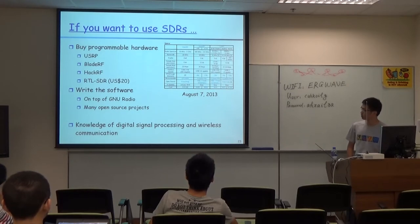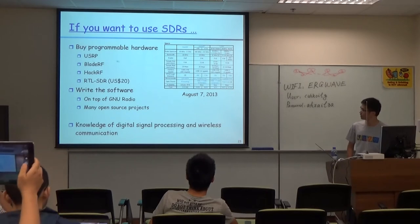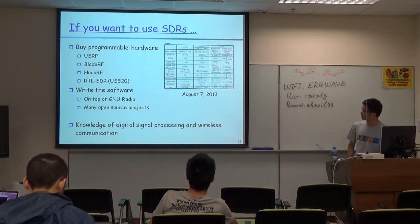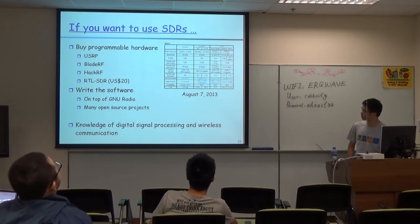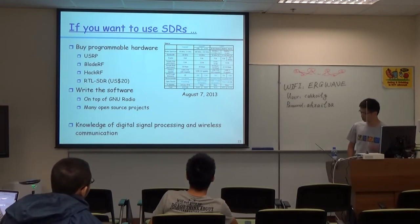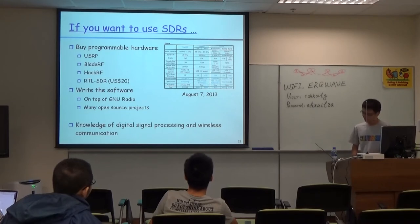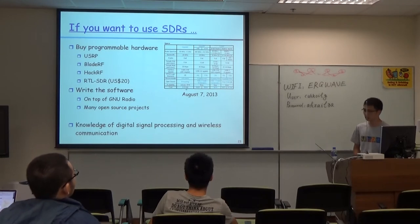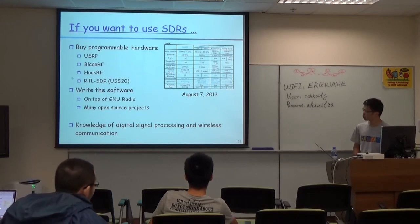If you want to use software-defined radio tools, you first need to buy programmable hardware. This table shows a comparison of different hardware platforms. You can see the cost — it's not cheap, quite expensive. The three kinds of SDR platforms shown range in price, with the cheapest option around $300 USD.